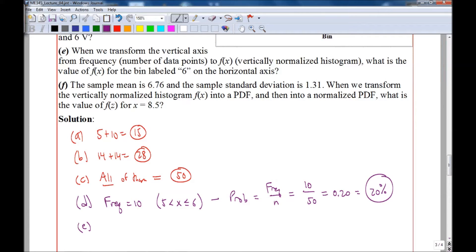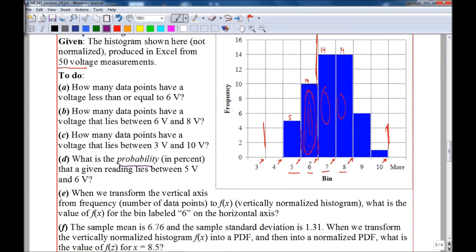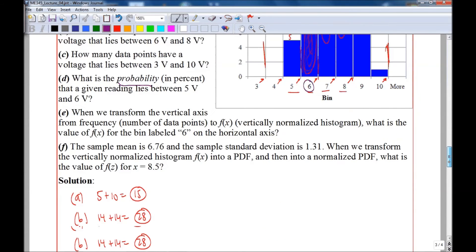Part E: When we transform the vertical axis from frequency to f(x), which is a vertically normalized histogram, let's calculate f(x) for the bin that's labeled six on the horizontal axis. Well, the bin that's labeled six is this bin here which actually has values of x from five to six, and therefore the midpoint is 5.5 of that bin.